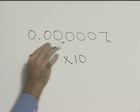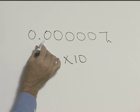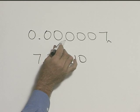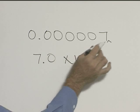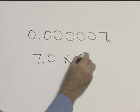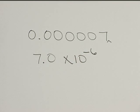Well, we're moving the decimal to the right, so it's going to be negative. So it goes 1, 2, 3, 4, 5, 6 — so it's to the negative 6. Writing this number in scientific notation, we get 7.0 times 10 to the negative 6.